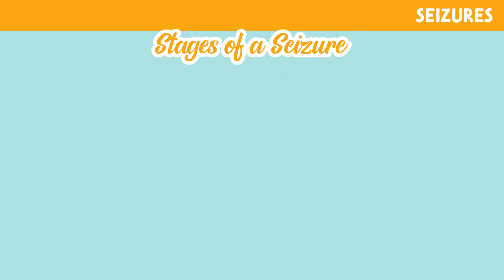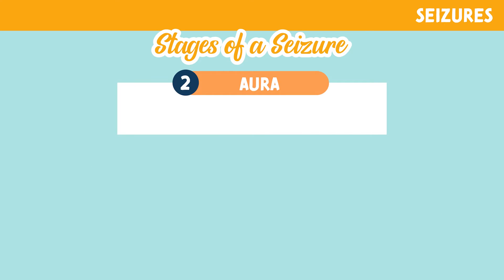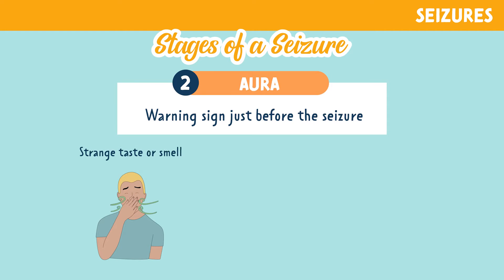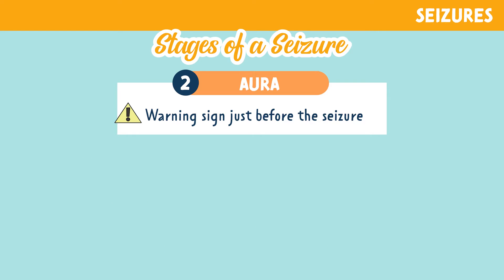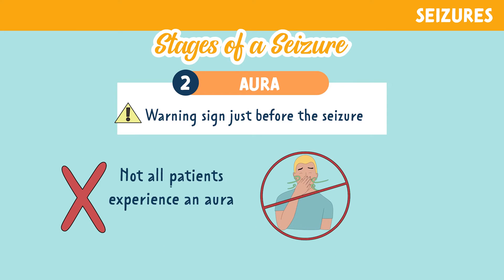The second stage is the aura. An aura can be thought of as a warning sign just before the seizure. These symptoms may include a strange taste or smell, altered vision, or dizziness. It's important to know that not all patients experience an aura before having a seizure.